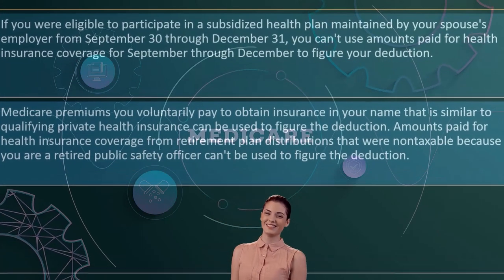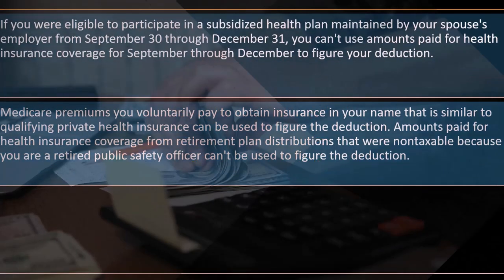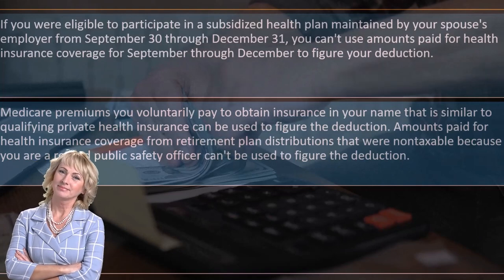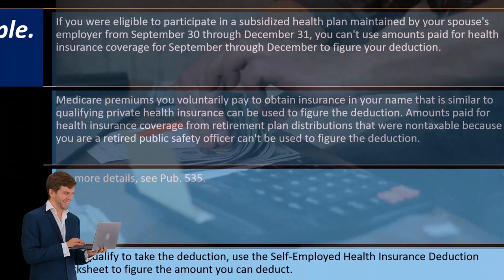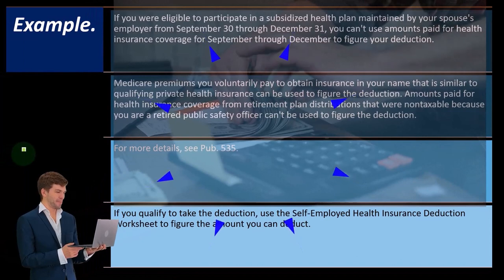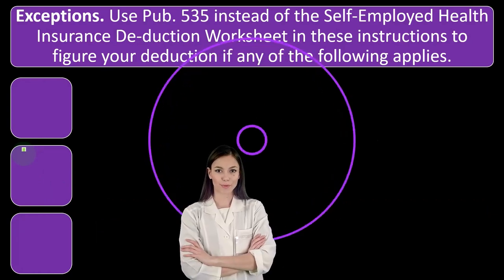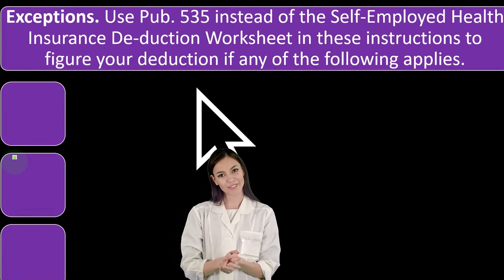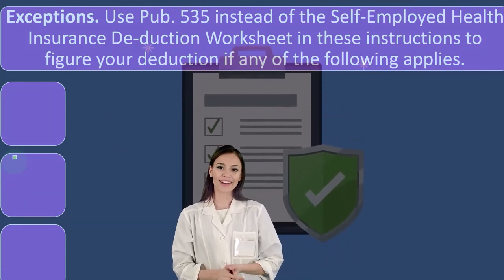Medicare premiums you voluntarily pay to obtain insurance in your name that is similar to qualifying private health insurance can be used to figure the deduction. Amounts paid for health insurance coverage from retirement plan distributions that were non-taxable because you are a retired public safety officer cannot be used. For more details, see IRS Publication 535 at IRS.gov. If you qualify, use the self-employed health insurance deduction worksheet to figure the amount — tax software is quite useful here to help work through the deduction and verify it makes sense.